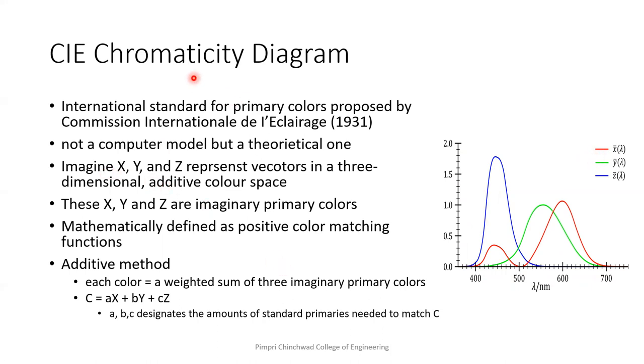Now, for this chromaticity diagram, instead of defining some actual primary colors, they provided three colors, which are imaginary colors: X, Y, and Z. We cannot realize these three colors X, Y, and Z. Assume as of now that X, Y, Z represent vectors in a three-dimensional additive color space. These are the imaginary primary colors for this chromaticity diagram.